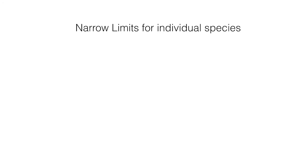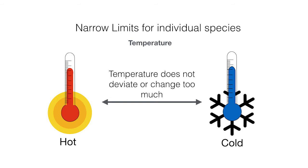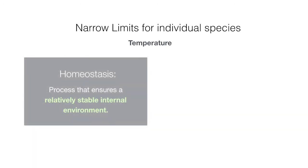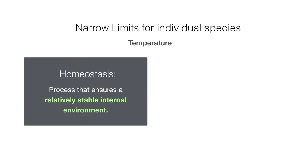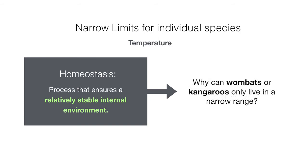For this video, the narrow limit we're going to focus on is temperature. Whilst it would be great if humans could walk around Antarctica in shorts without fear of hypothermia, we need to live in an environment where the temperature does not deviate or change too much. A common question is: if homeostasis is a process that ensures a relatively stable internal environment, then why is it that humans can only live in a narrow range? When other organisms undergo homeostasis, such as wombats or kangaroos, why can they only live in a narrow range despite changes in their external environment? We'll try to answer that today.